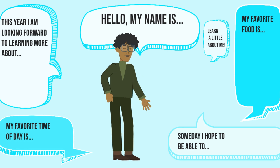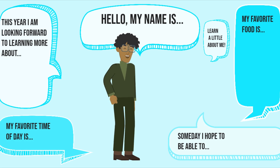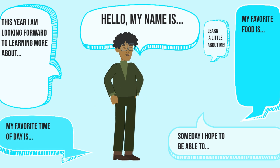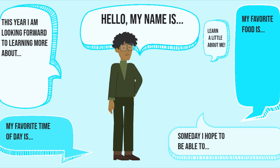Powers: Under Article 163, the Chief Minister is the Head of the Council of Ministers and advises the Governor on matters related to the State. Under Article 164, the Chief Minister is appointed by the Governor and shall hold office during the pleasure of the Governor.